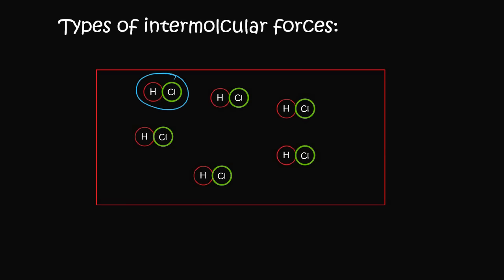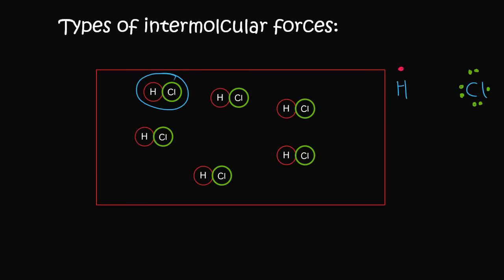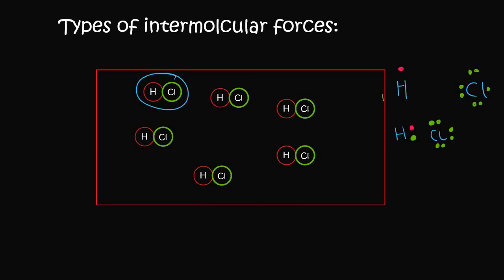To do that, we take one molecule and zoom in with a Lewis diagram. If you had H and Cl — hydrogen has one electron whereas chlorine has seven — and when these two bond together, the Lewis diagram would look like this.